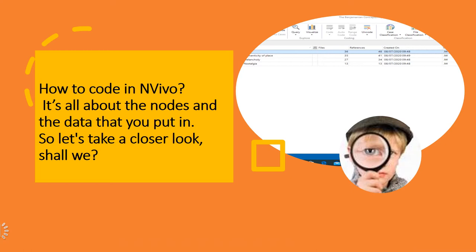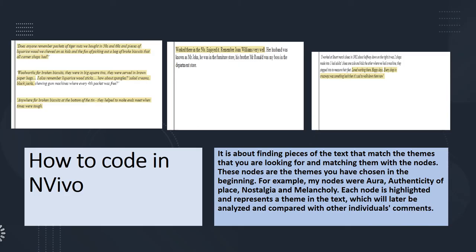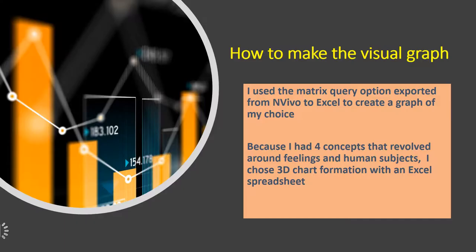How to code in NVivo — it's all about the nodes and the data that you put in. It's about finding pieces of text that match the themes you're looking for and matching them with the nodes. These nodes are the themes chosen at the beginning. For example, my nodes were aura, authenticity of place, nostalgia, and melancholy. Each node is highlighted and represents a theme in the text, which will later be analyzed and compared with other individuals' comments.